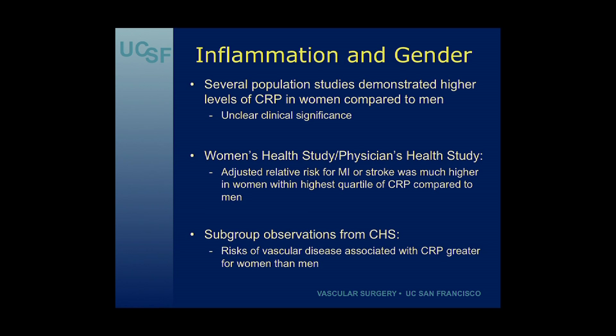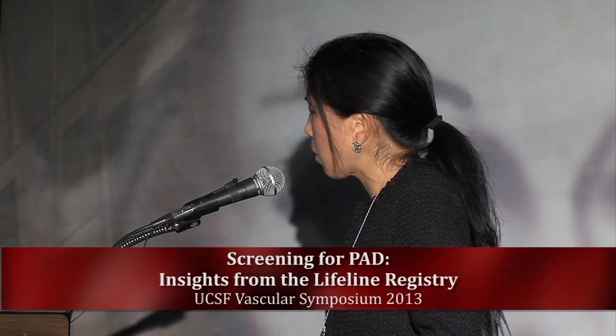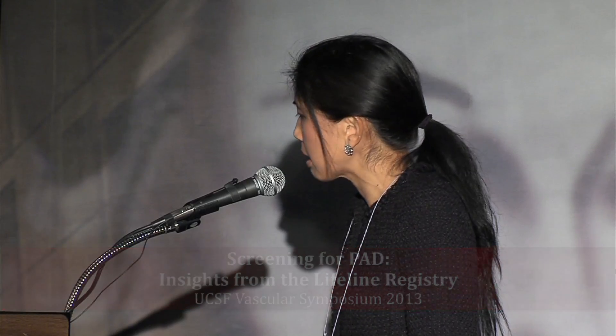When looking at combined data from the Women's Health Study and the Physicians' Health Study, the adjusted relative risk for MI or stroke was much higher in women in the highest quartile of CRP compared to men in the similar quartile. In subgroup observations from the Cardiovascular Health Study, risks of vascular disease associated with CRP were greater in women than men. We also showed in a cohort undergoing lower extremity bypass grafts that women with high CRP levels were more likely to lose primary graft patency compared to women in the low CRP group — and this was not seen in men.